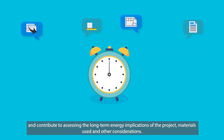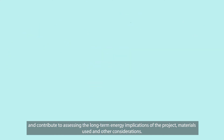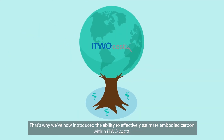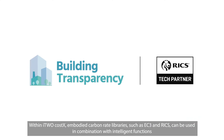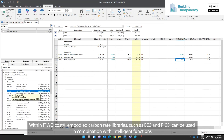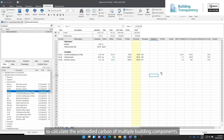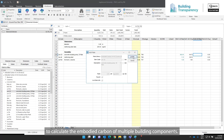That's why we've now introduced the ability to effectively estimate embodied carbon within I2CostX. Within I2CostX, embodied carbon rate libraries such as EC3 and RICS can be used in combination with intelligent functions to calculate the embodied carbon of multiple building components.